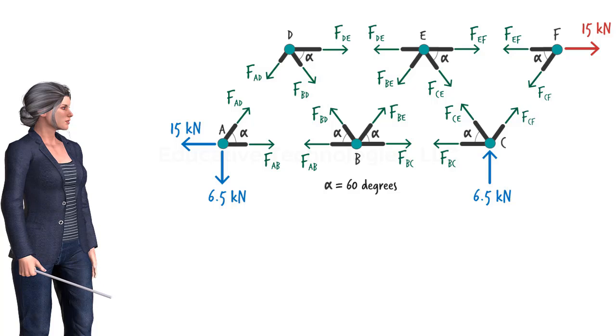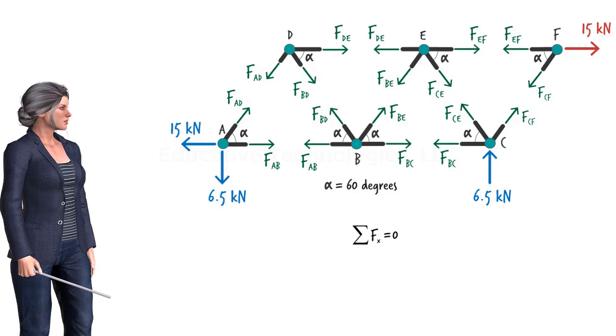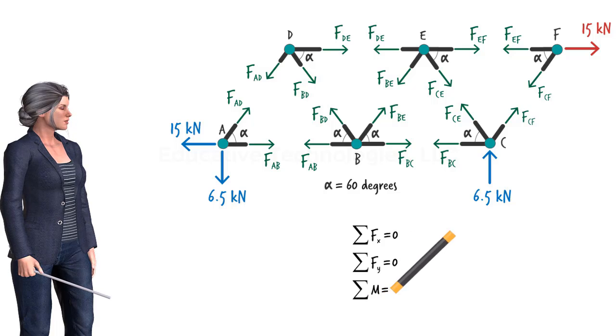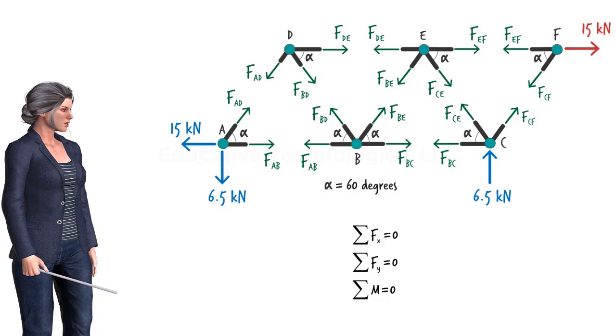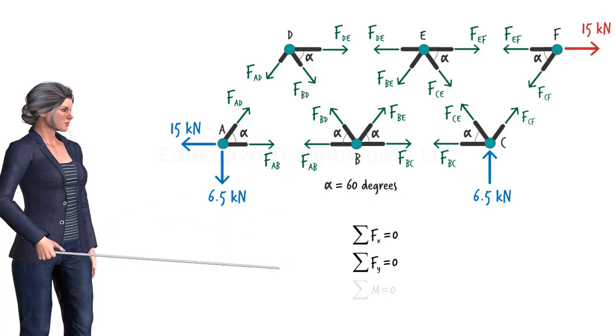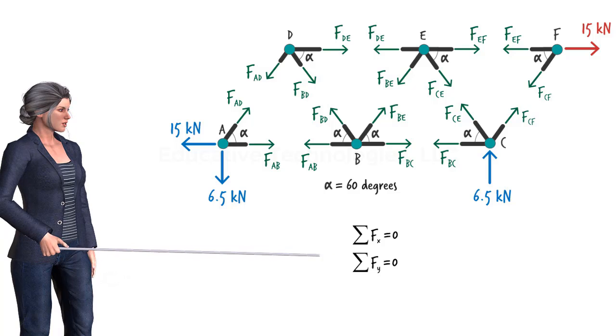What are the equilibrium equations? There are three of them. The sum of the forces in the x direction must be zero. The sum of the forces in the y direction must be zero. The sum of the moments about the joint must be zero. Note that the third equation is automatically satisfied. That is, since every force that acts at a joint passes through the joint, its moment about the joint is zero. Therefore, we are left with these two equations for calculating the unknown member forces.